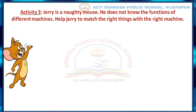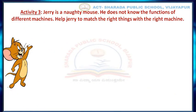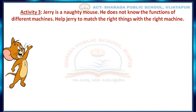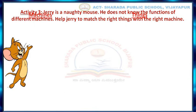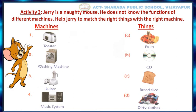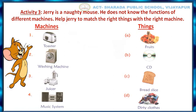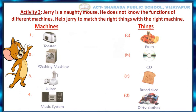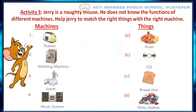Let us move to Activity Number 3. Jerry is a naughty mouse. He does not know the functions of different machines. Help Jerry to match the right things with the right machine. Match the names of the machines with the things that belong to these machines. For example, can you find the thing which belongs to the first machine?